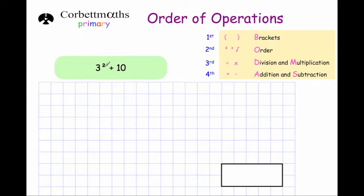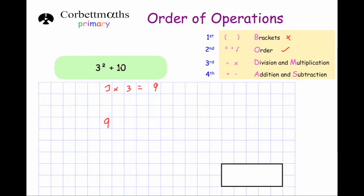Our next question is 3 squared plus 10. This question has no brackets but it has a squared, which is what we call an order. So we work out 3 squared first. Squared means times by itself, so it means 3 times 3, and 3 times 3 is 9. So 3 squared is 9. Then we've got plus 10 after that, and 9 plus 10 is equal to 19. So the answer is 19.